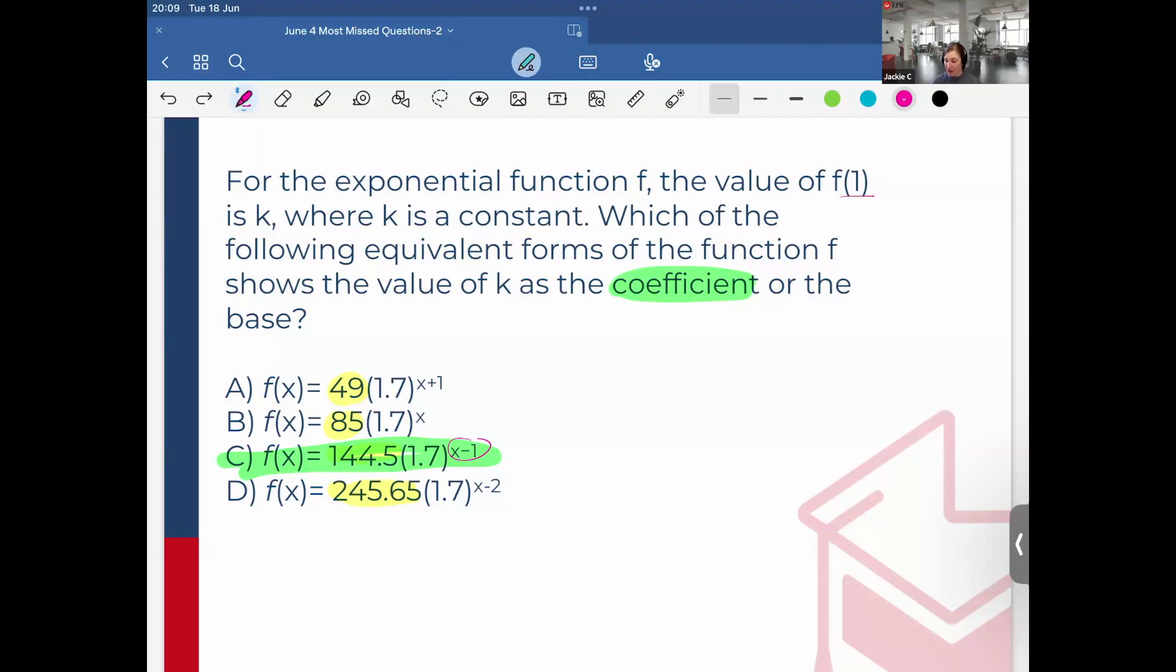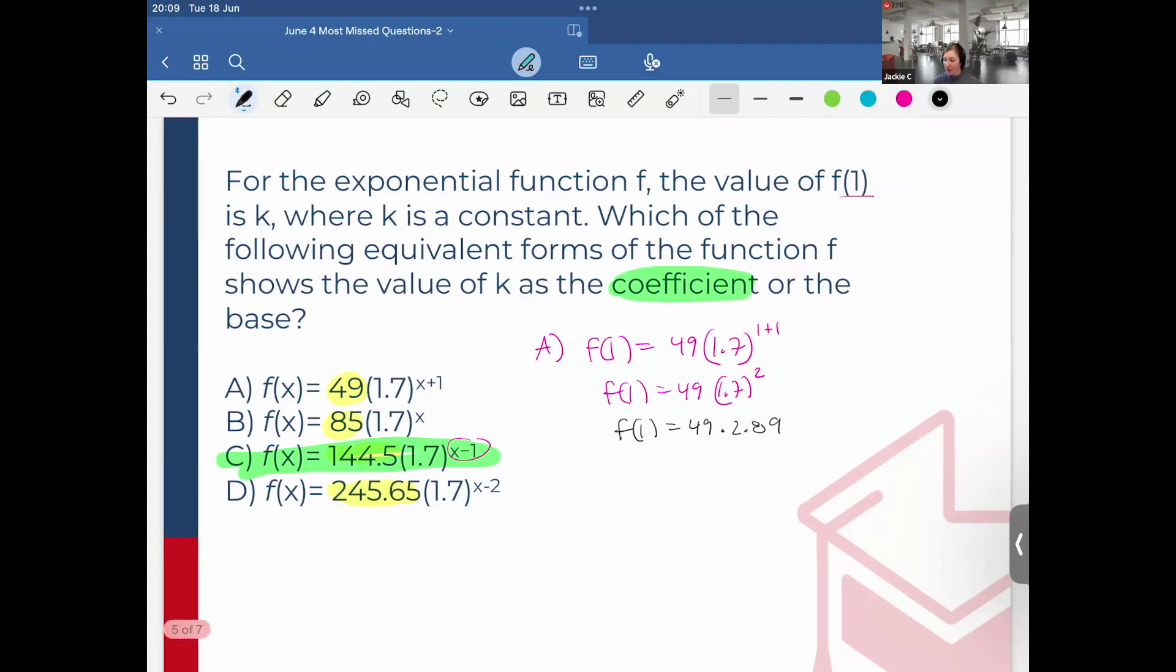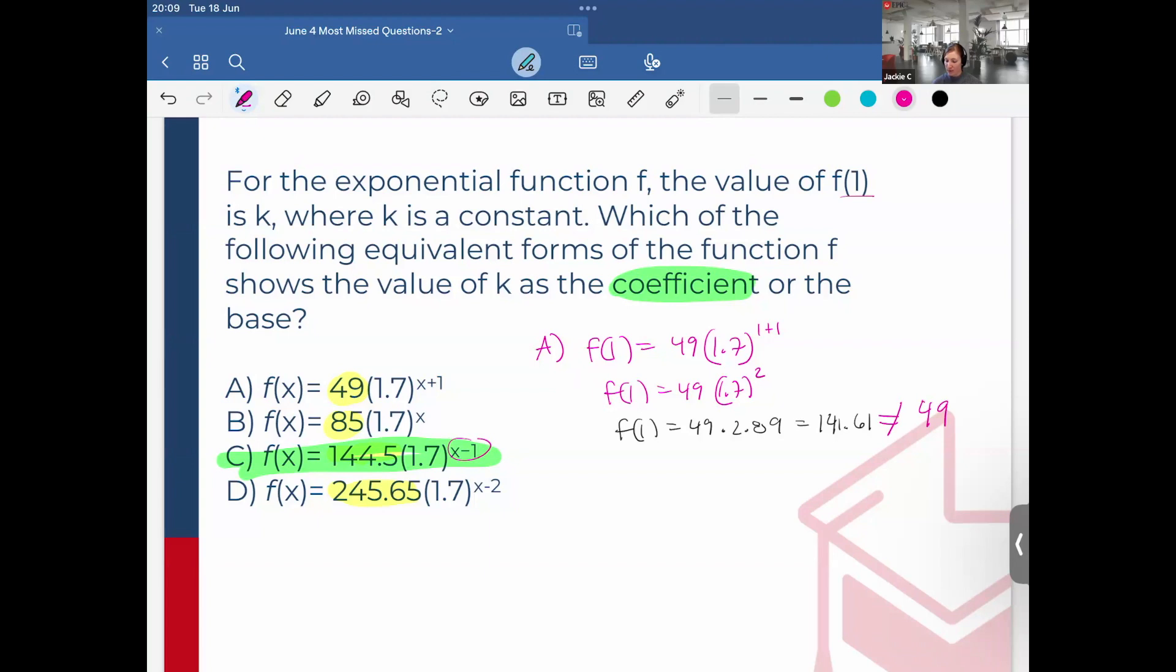Okay, so starting with A. So A, I would just do f(1) equals 49 times 1.7 to (1 plus 1), and that would be equal to 49 times 1.7 squared. And remember, f(1) is equal to 49 times 2.89, and 49 times 2.89 is equal to 141.61. This is equal to the k value, and that is not equal to 49. So A can be discarded.